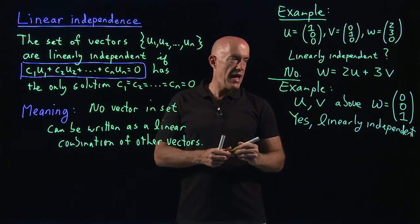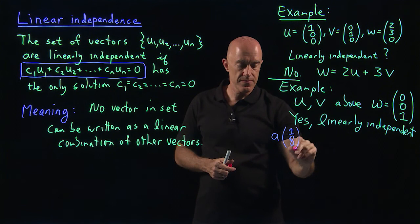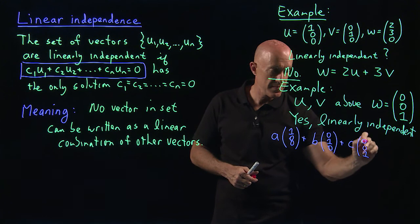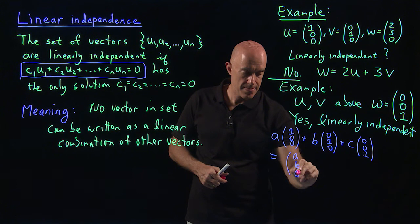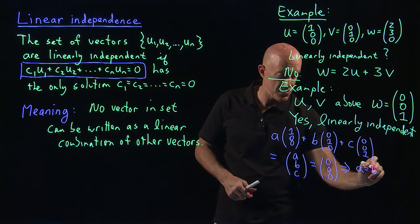And I can show you that explicitly, right? So, if we write A times U, so A times (1, 0, 0), plus B times V, B times (0, 1, 0), plus C times W, (0, 0, 1). This one is just (A, B, C), right? And if we want this to solve this to be 0, then that implies that A equals 0, B equals 0, and C equals 0. They're all 0.